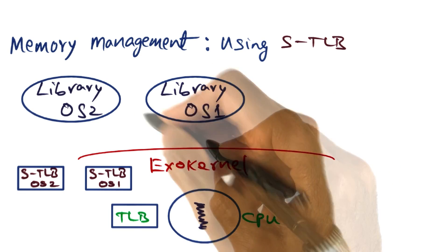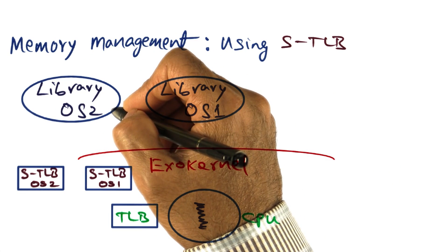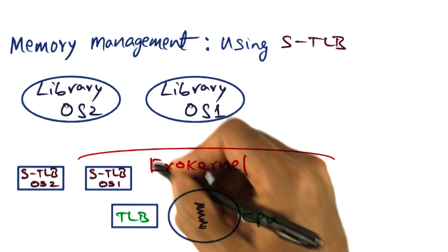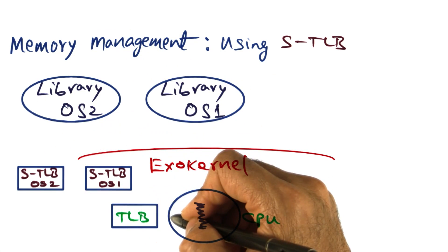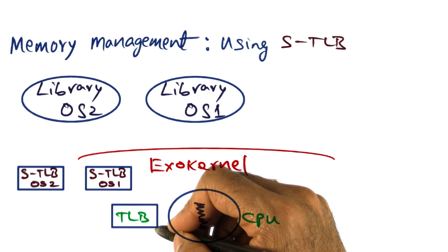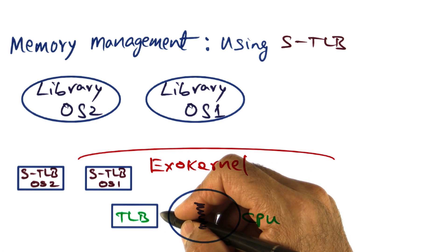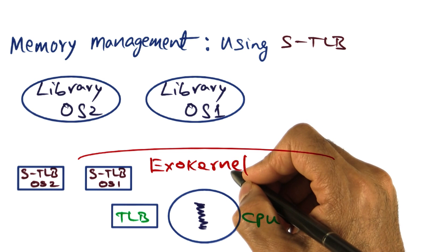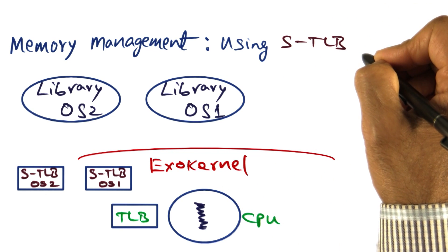And if we do that, when we run this other library operating system, it's not going to find any of its virtual addresses in the TLB. And that's a huge source of overhead. In order to mitigate that overhead, exokernel has this mechanism called software TLB.